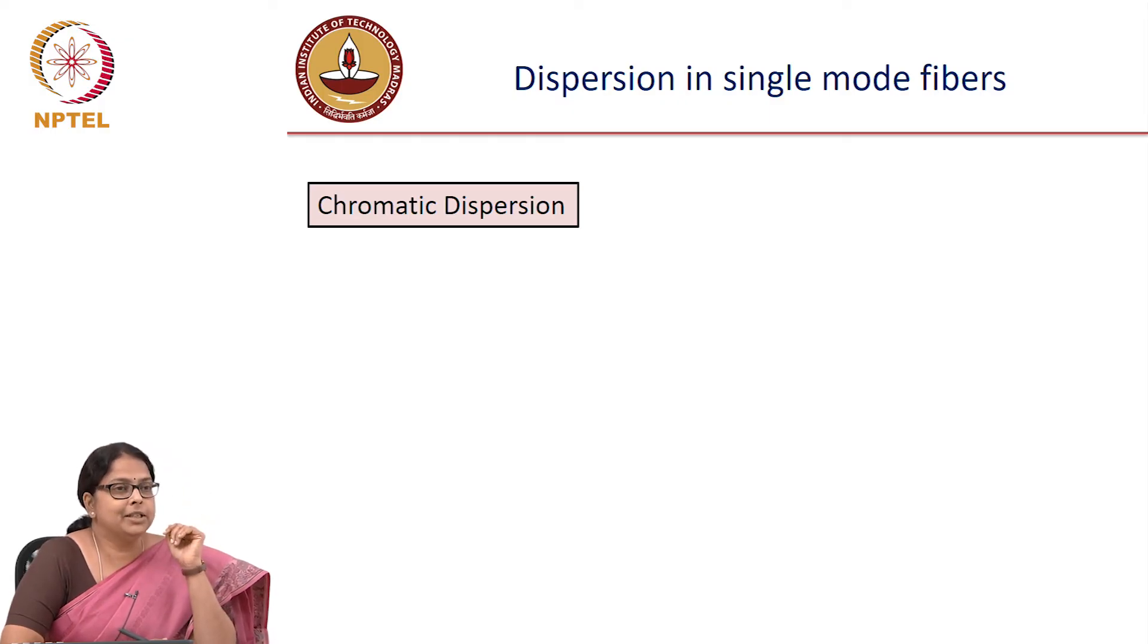Last time we talked about dispersion in multimode fibers, where we said that the different mode paths are different and so the delay is different. The time of arrival of each mode is different and so you have dispersion.